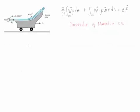This case is conservation of momentum for a control volume. However, the difference is that in this case the control volume is moving. Therefore, when we define the equation, the velocity that we are going to use is going to be the relative velocity.